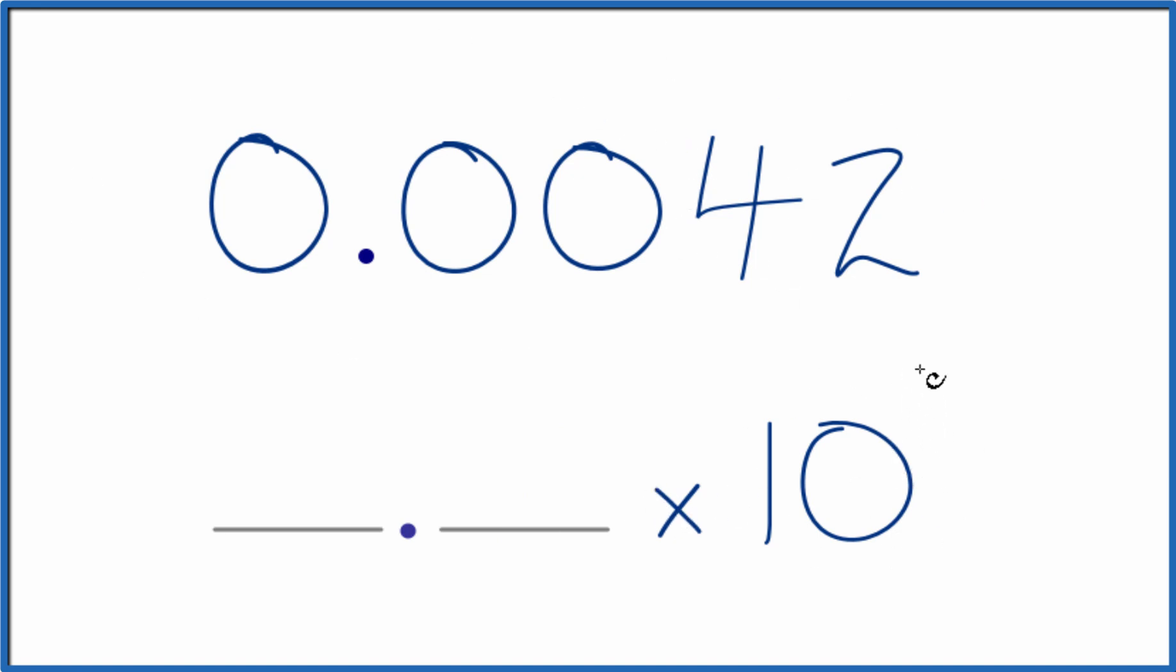And in this case, because this is less than 1, we know that it's going to be 10 to the negative something. The exponent will be negative.